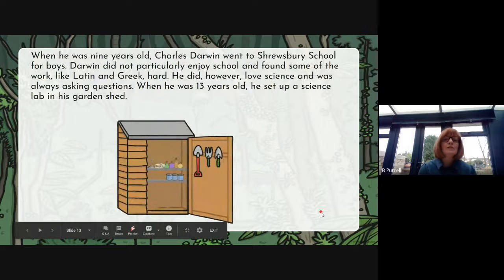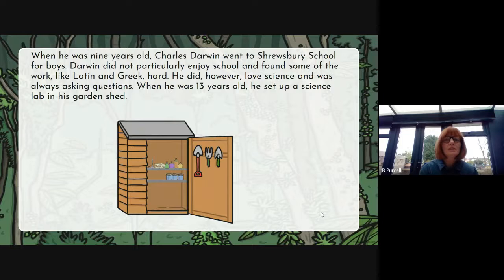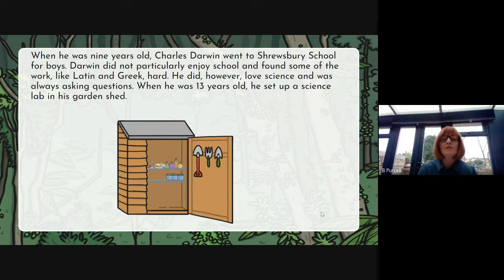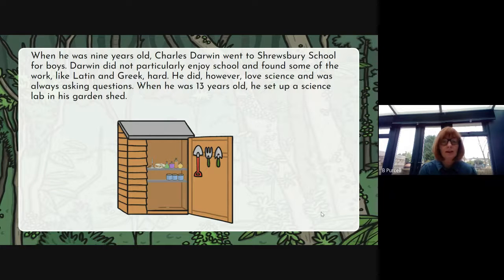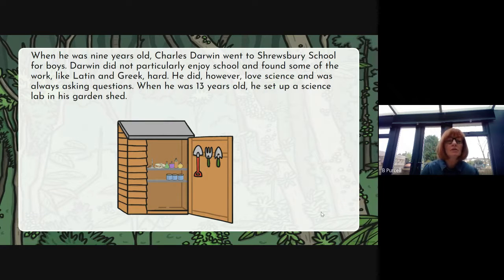When he was nine years old, Charles Darwin went to Shrewsbury School for boys. Darwin did not particularly enjoy school and found some of the work like Latin and Greek hard. He did, however, love science and was always asking questions. When he was 13 years old he set up a science lab in his garden shed — his love of science was so great that he developed a way of setting up a science laboratory in his garden shed.